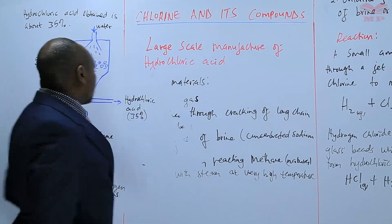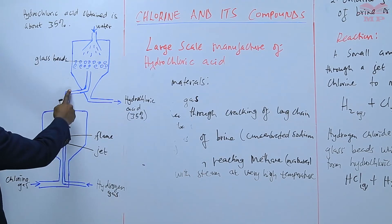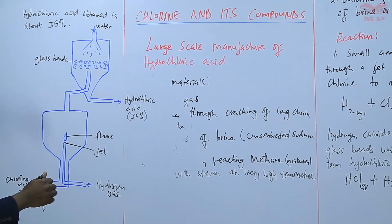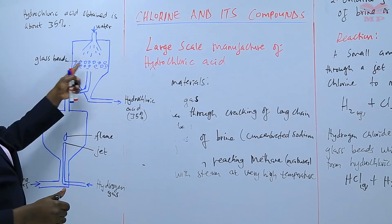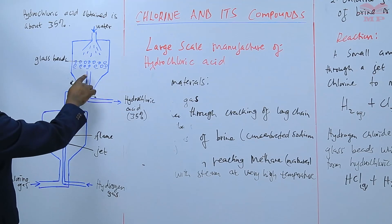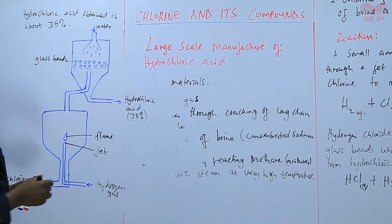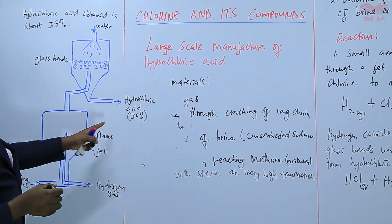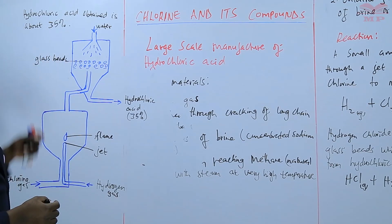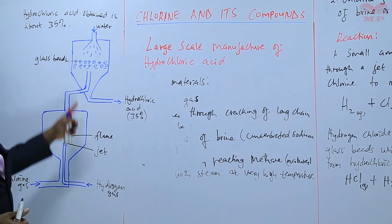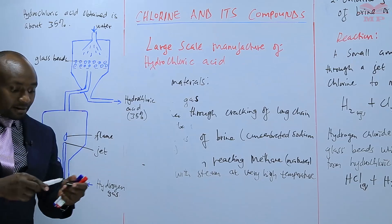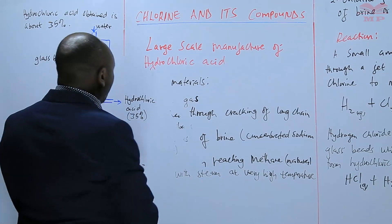So the hydrogen chloride rises, then it is dissolved in water that is coming from the top over the glass beads which provide a large surface area, and then the hydrochloric acid trickles out and is collected. So this hydrochloric acid is about 35 percent. So this is the large-scale manufacture of hydrochloric acid as represented by this diagram. We'll have an assignment on that.